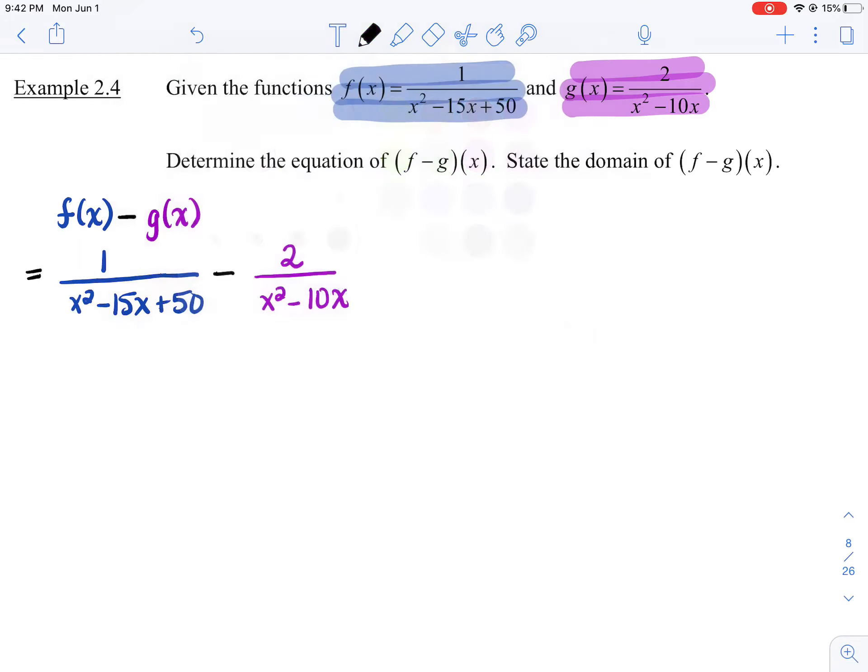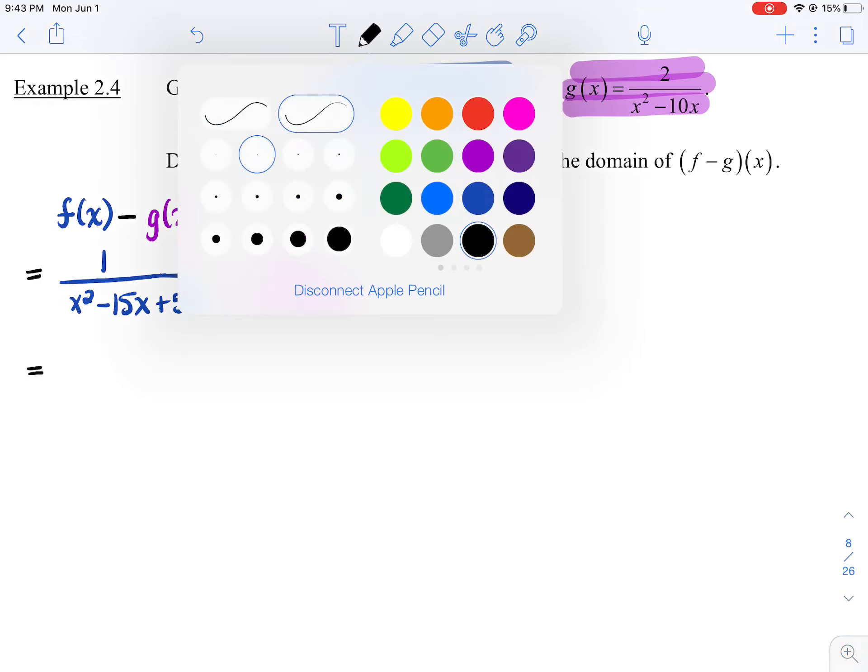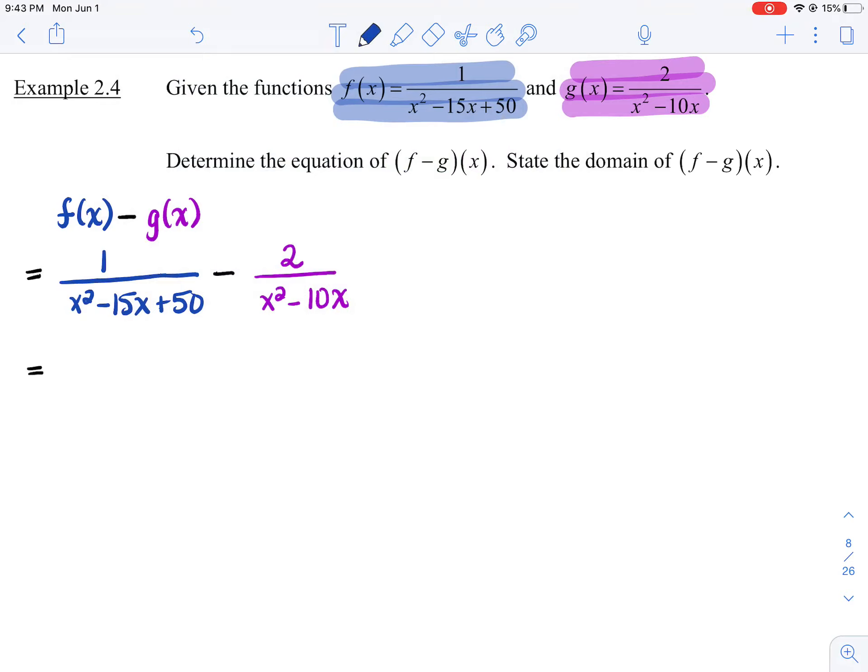All right, now this is a math 20 concept where we're subtracting rational expressions. What you want to do is come up with a common denominator. To do so, we're going to have to factor first. So the first function f at x, I can factor the denominator by doing inspection. So two numbers that add up to negative 15 and multiply to 50 would be x minus 10, x minus 5.